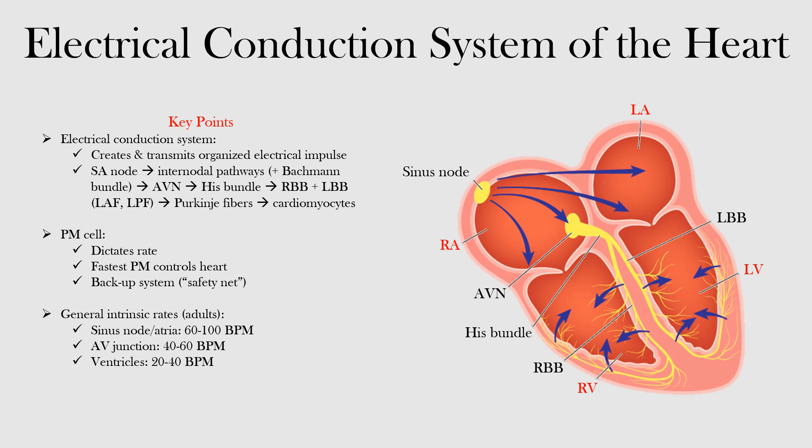This is an electrical-chemical process that creates electrical energy captured by the electrodes when we perform an EKG. Normally, the electrical conduction starts at the sinus node, also commonly referred to as the sinoatrial or SA node. The impulse travels through the internodal pathways to the AV node, then continues through the bundle of His, the right and left bundle branches, and then to the ventricular Purkinje fibers.